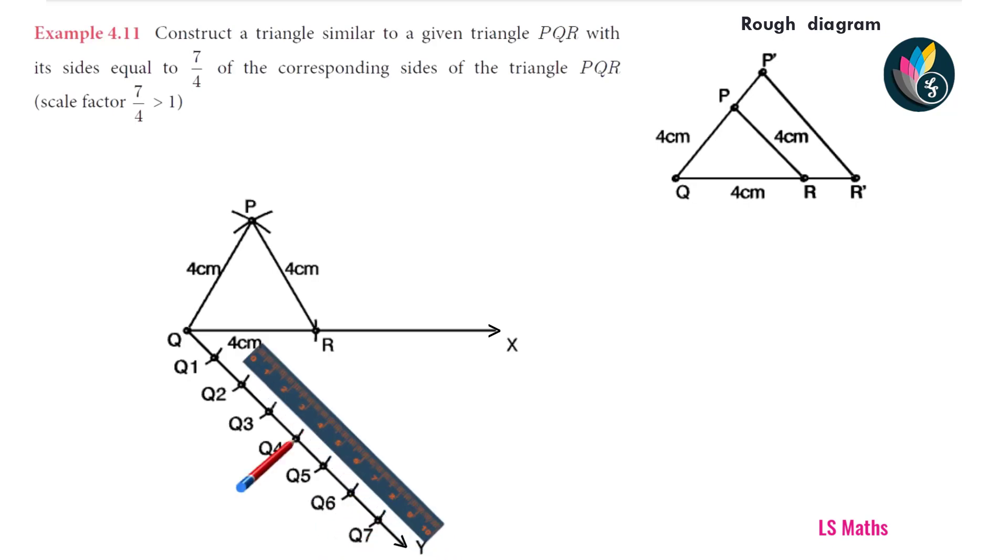Next, we are going to join Q4 and R, because in the denominator, we have the value 4. So, Q4 and R joined. Next, we are going to draw a small arc with radius less than 1 cm at Q4. A small arc at Q4.